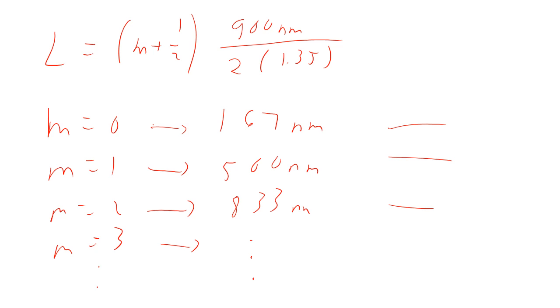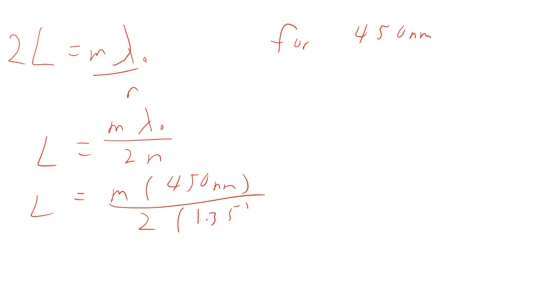The other condition that we want to meet is that we want to make sure that we get maximum reflection at 450. So that means that we want 2L equal to M lambda over N, so for 450 nanometers. So that means L equals M lambda naught over 2N. So this is going to be M times lambda naught 450 nanometers divided by 2 times 1.35.